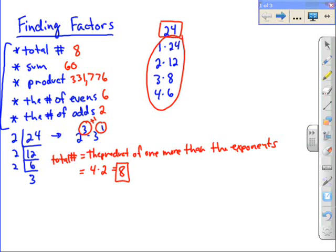And that matches up exactly with what we had up here. There are eight factors. So the shortcut is prime factorization, add one to each exponent, and multiply those things together, those two numbers together, or three numbers if your prime factorization leaves three numbers.